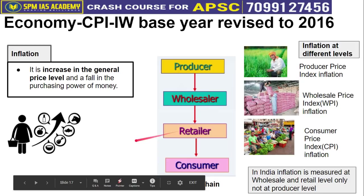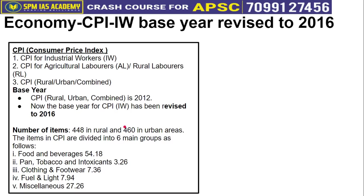This news is related to Consumer Price Index inflation, which is calculated in different ways. First, there is CPI for Industrial Workers — a list is made of items used by factory workers, and price changes in those items are calculated. There is also CPI for Agricultural Laborers — measuring inflation for those working in agricultural fields. Additionally, there is CPI for Rural Laborers — for those in rural areas working outside agriculture. And finally, combining all of these gives us CPI Combined, covering both rural and urban areas. So there are four types of CPI: for Industrial Workers, Agricultural Laborers, Rural Laborers, and Combined.